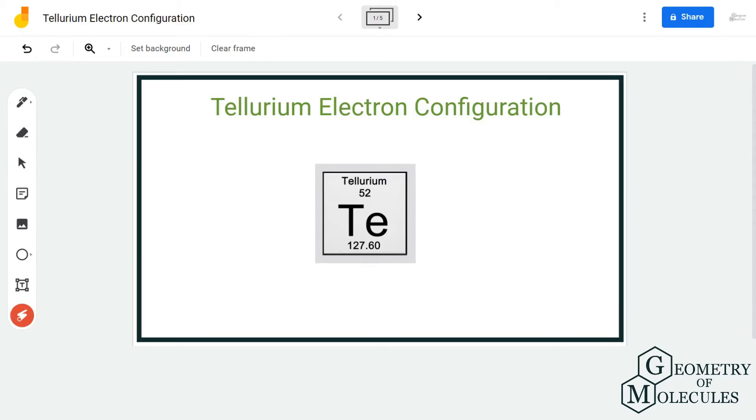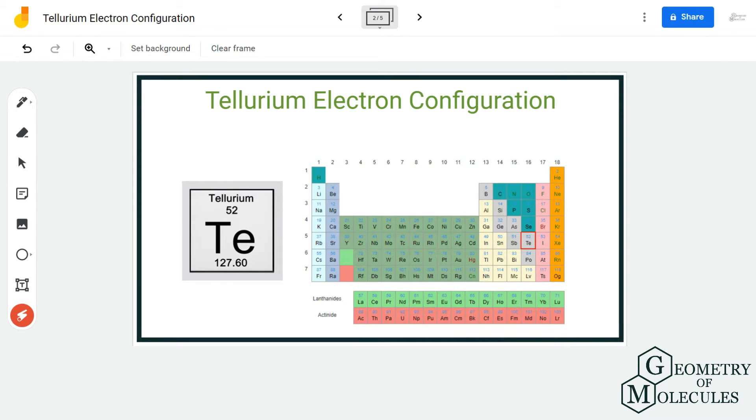Hi guys, welcome back to our channel. In today's video we are going to help you determine the electron configuration of tellurium atom. It has a chemical symbol of Te and an atomic number of 52. Once you know the atomic number, you can know the number of electrons. You can also use the periodic table to determine the atomic number.